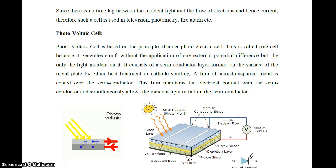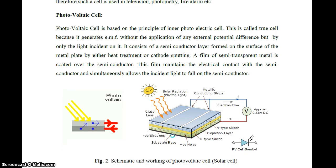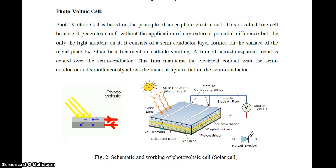Electrons flow from N-type material to P-type material, and recombination of electron-hole pairs takes place, producing a small DC current flowing through the circuit. A film of semi-transparent metal is coated on the semiconductor, which maintains electrical contact while allowing incident light to fall on it. The photovoltaic cell symbol, hole-electron pairs, and sunlight in the form of photons are shown in the figure. The solar cell converts solar energy into electrical energy.